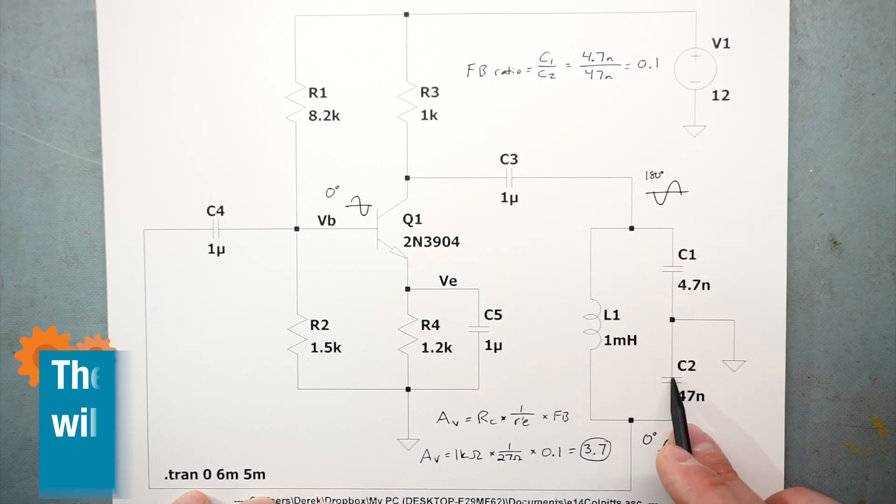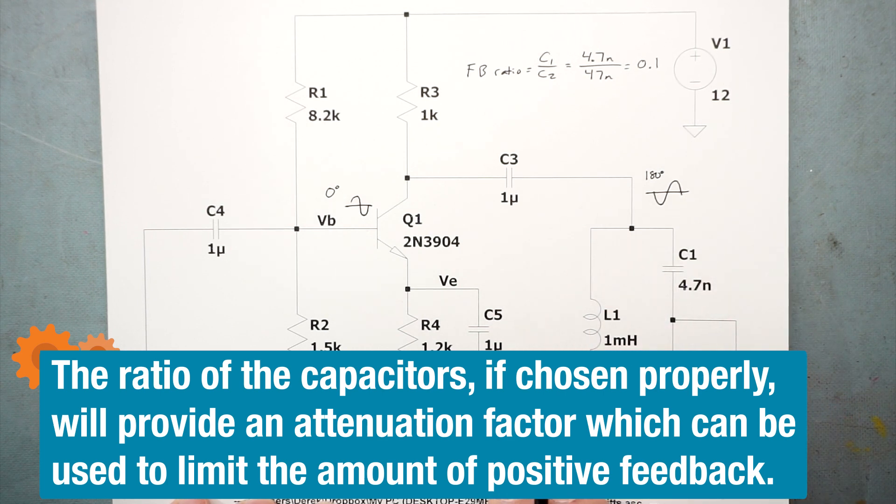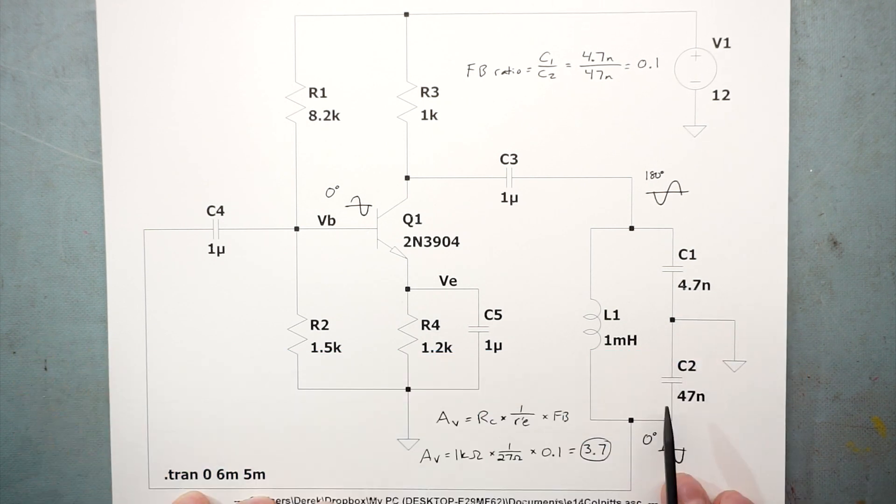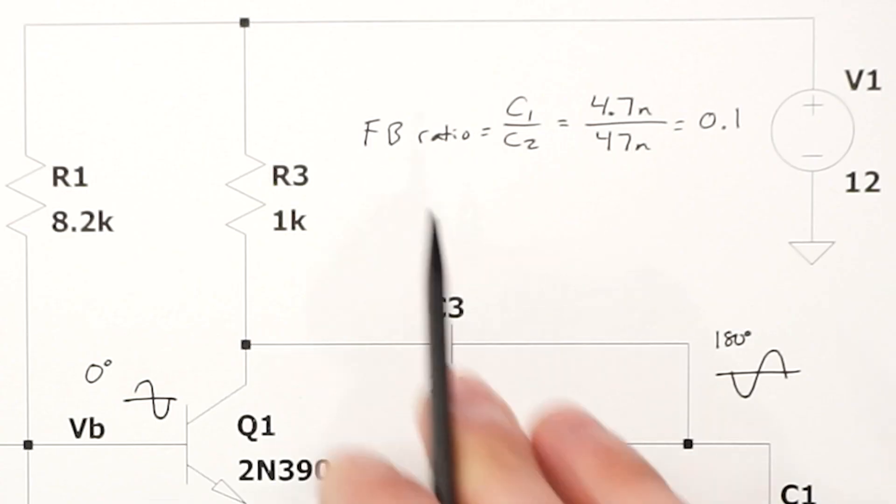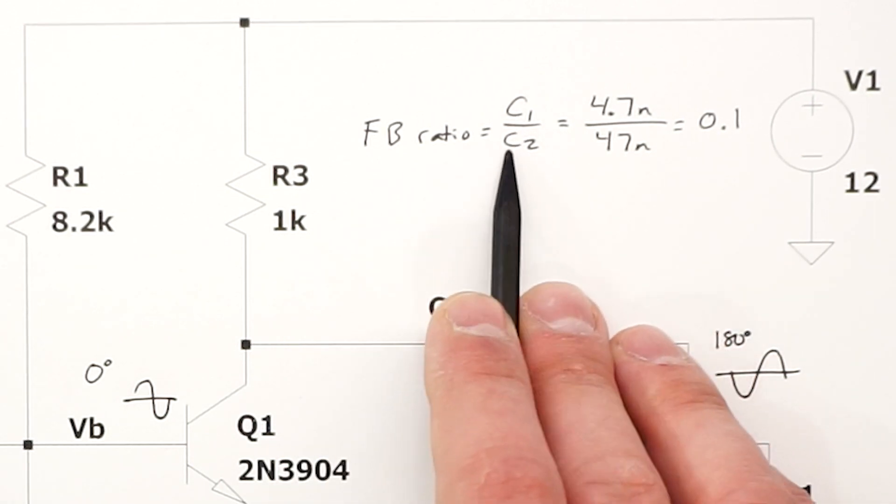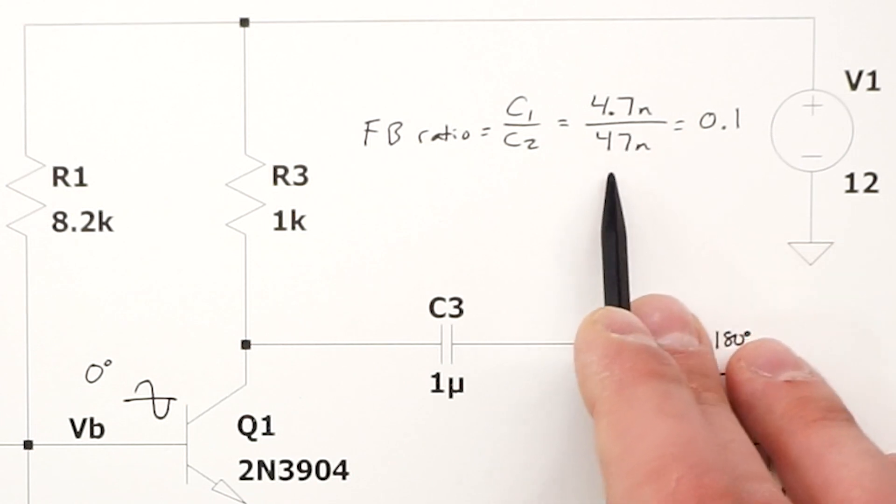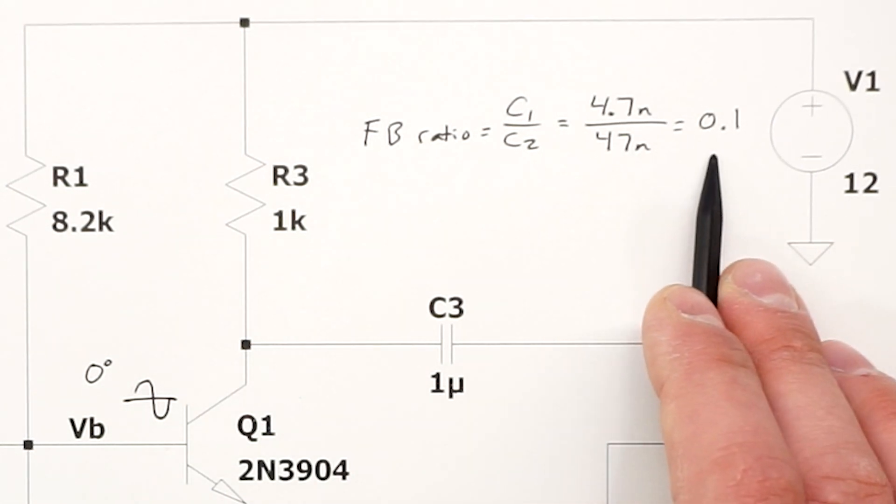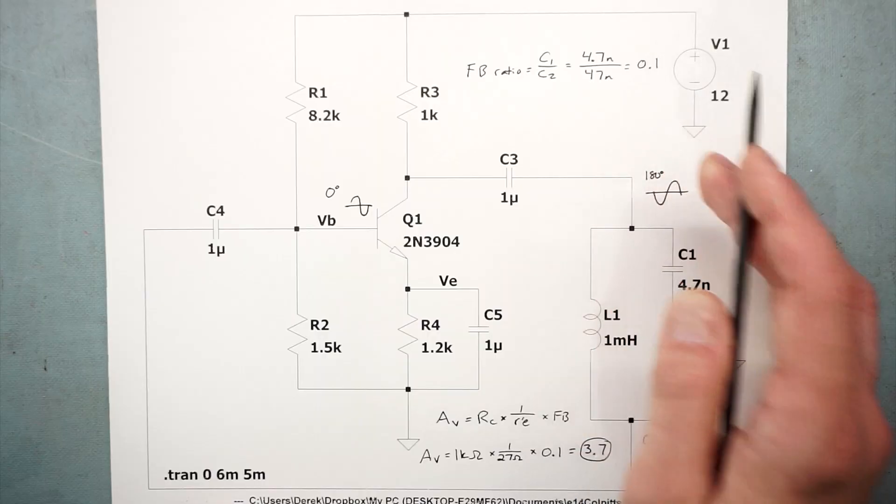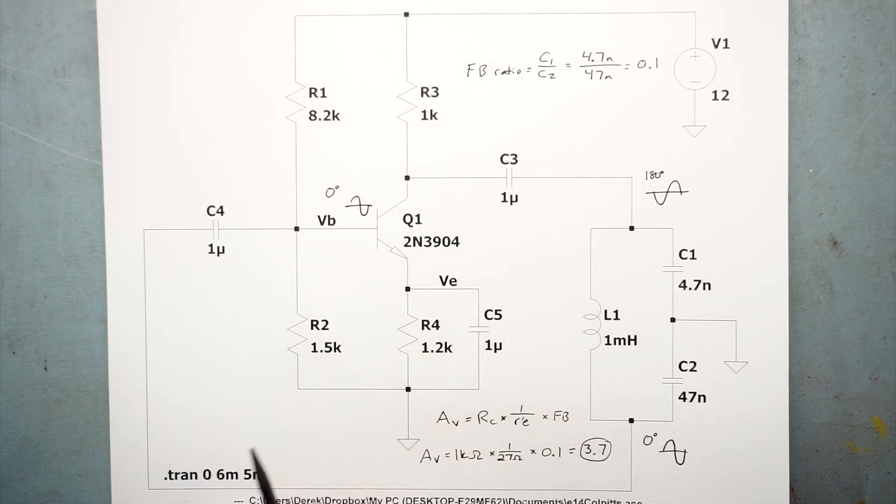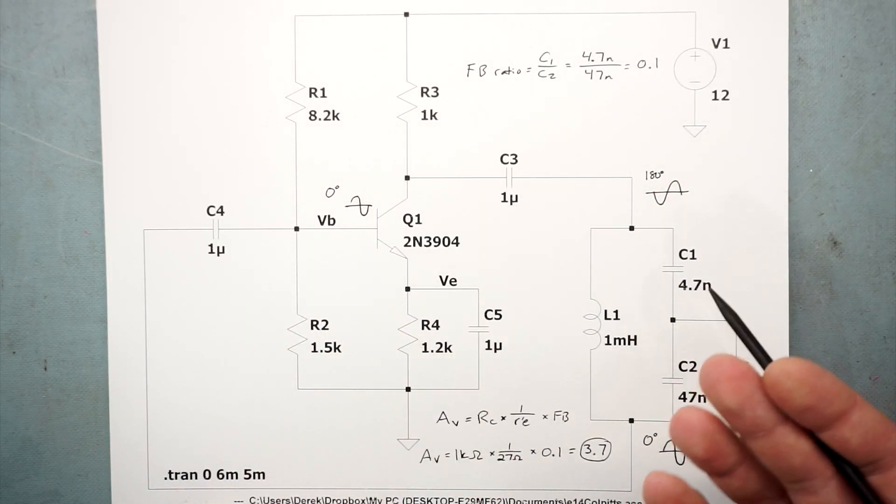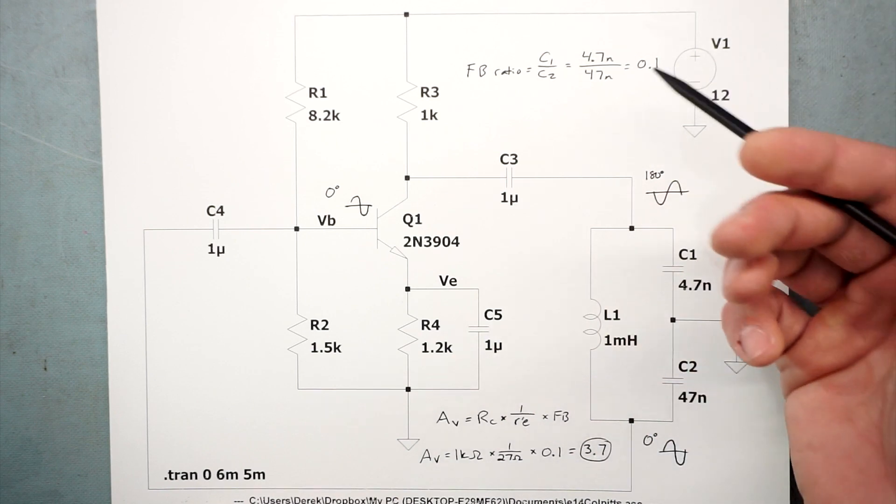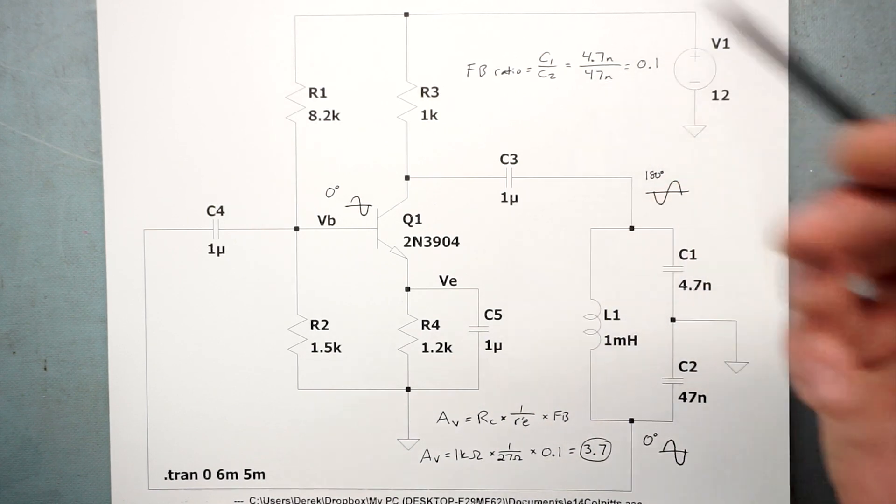What about the ratio of these two capacitors? That comes into play. That affects our overall gain. Let's look at the ratio of these. I have a 10 to 1 ratio, 4.7 nanofarads to 47 nanofarads. The feedback ratio that gets fed back to the base is equal to C1 over C2, or 4.7 nanofarads divided by 47 nanofarads. That comes out to 0.1, so 10% of that energy we're feeding back in. You can play with the values of these capacitors. You can actually make them equal to 1 by saying 47 nanofarads over 47, and it should still oscillate.